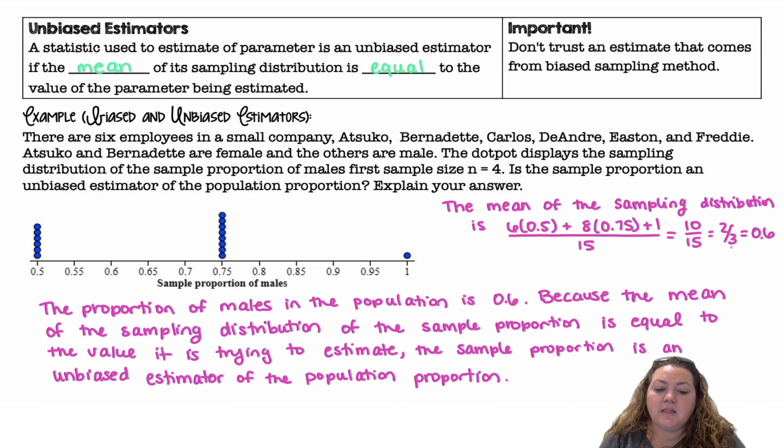So the proportion of males in the population is 0.6. Because the mean of the sampling distribution of the sample proportions is equal to the value it is trying to estimate, the sample proportion is an unbiased estimator of the population proportion.